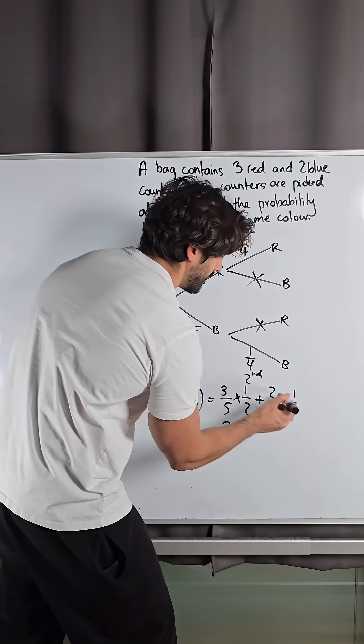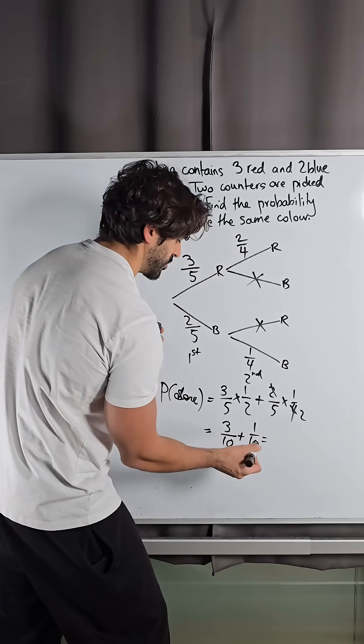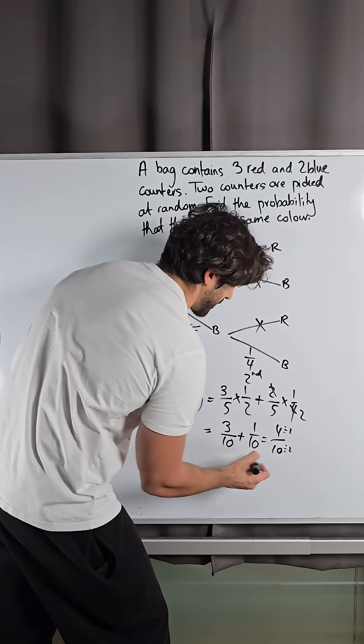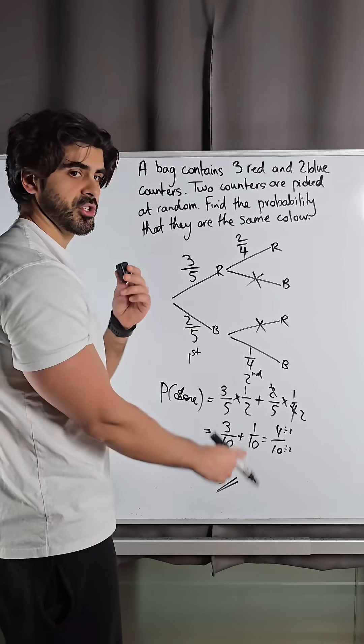Plus here, two goes into four twice, one over ten, which is four over ten, which you can divide top and bottom by two. You got a final answer of two-fifths, and that is our solution.